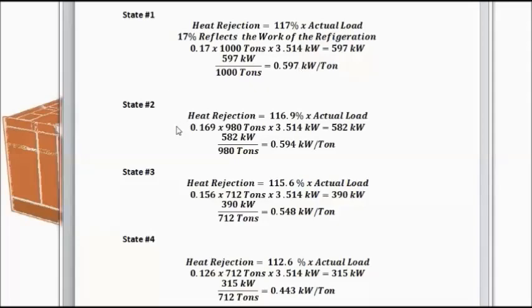And in state 2, we can make the same calculation. And we come out with 0.594 kW per ton. And since this is a variable speed chiller, we would expect a small improvement with the slight load reduction. But note that it is fairly small at this point, and maybe we should even discount it.